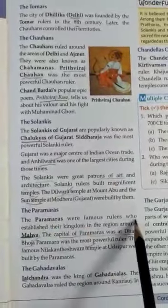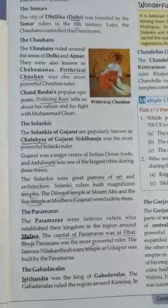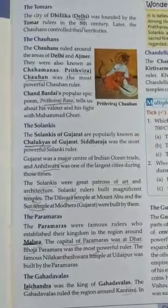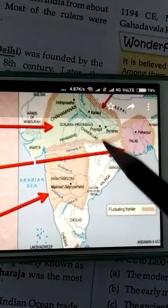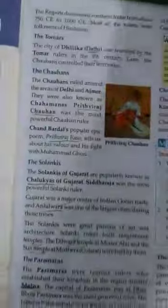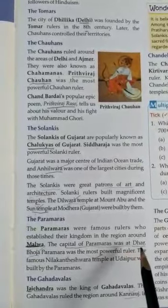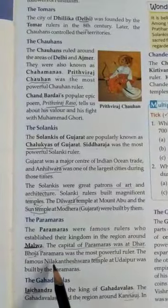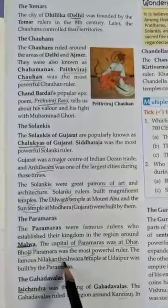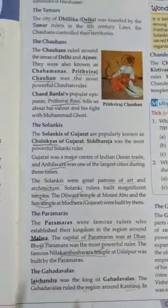The Paramaras' capital was at Dhar. Bhoja Paramara was the most powerful ruler, and the famous Nilkantheshwar Temple at Udaipur was built by the Paramaras.